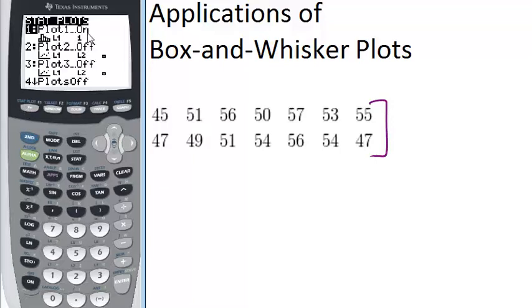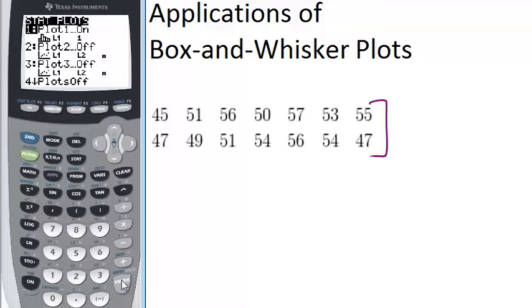I have plot 1 is on, but it's set for a histogram. So I need to select that and scroll over so that I can select my box and whisker plot, which is right here. And once you have that highlighted, you see it switches over, so now we're set for that.